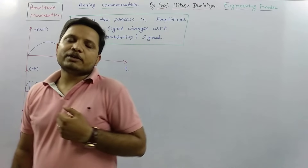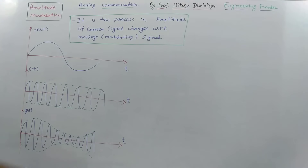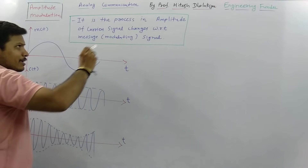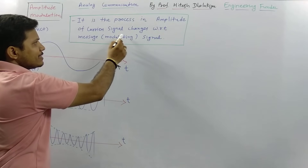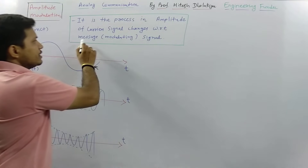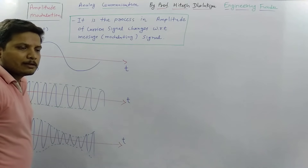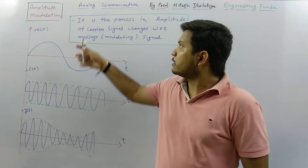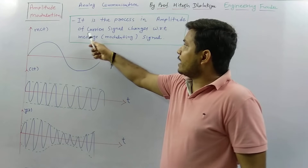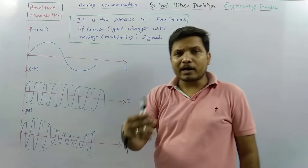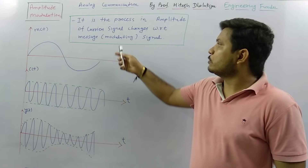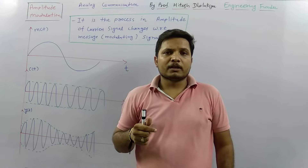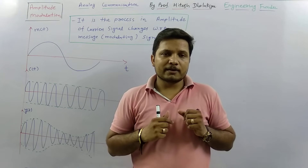So what is amplitude modulation? Amplitude modulation is a process in which the amplitude of the carrier signal changes with respect to the modulating signal. The amplitude of the carrier signal is modified with respect to the modulating or message signal — that is the basic process.